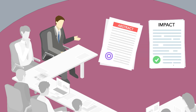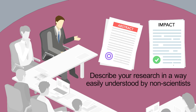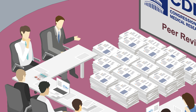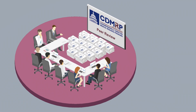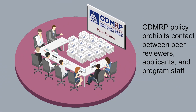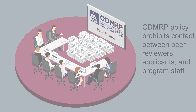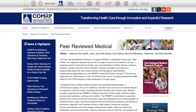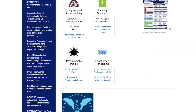The lay abstract and the impact statements are two documents that consumer reviewers rely on heavily during peer review. Because of this, it is important that you clearly describe your proposed research and the anticipated impact in a way that can be easily understood by non-scientists. You will not know the identities of the individuals who specifically reviewed your application because CDMRP policy prohibits contact between peer reviewers, applicants, and program staff. However, after peer review, program staff publishes lists of that program's peer reviewers on the program's specific webpage.